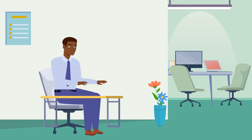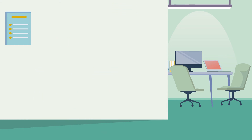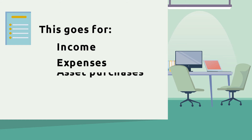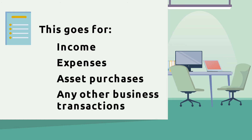Any transactions that go through your business, such as stamp duty and loan payments, do not need to be included in the GST section of your activity statements because they are out of scope of GST law. This goes for income, expenses, asset purchases and any other transactions that happen in your business.